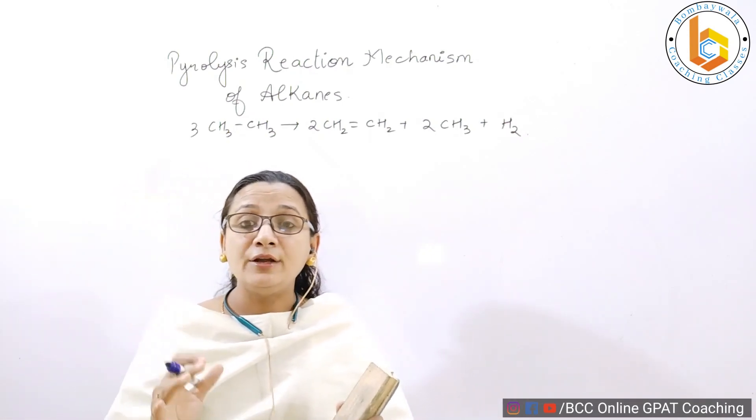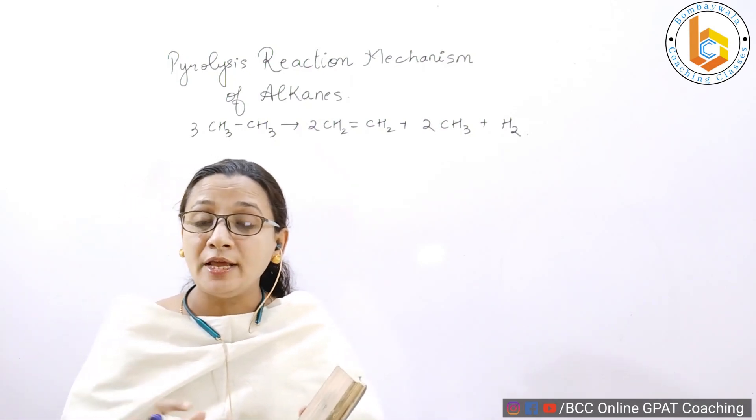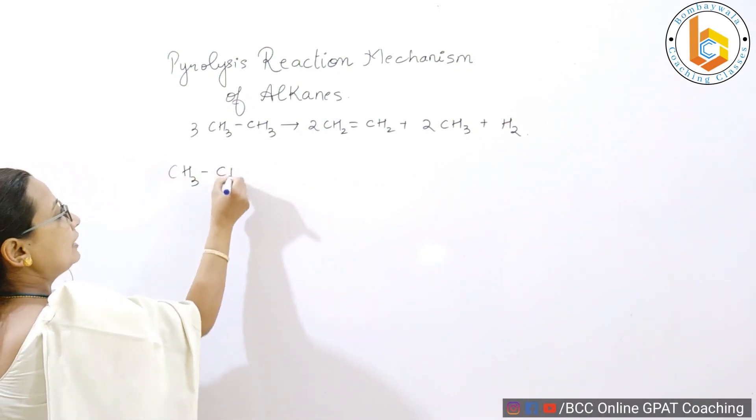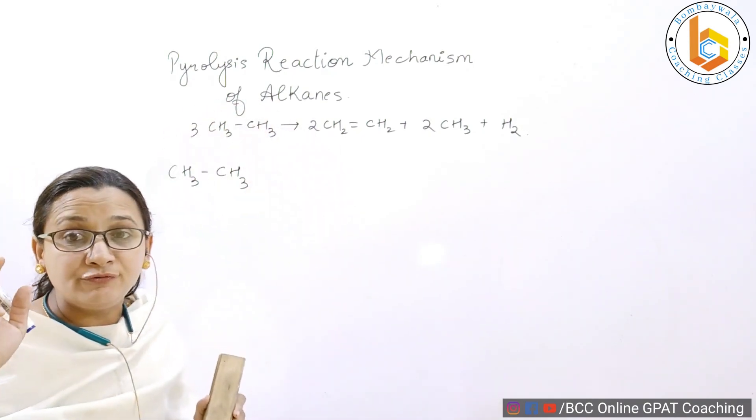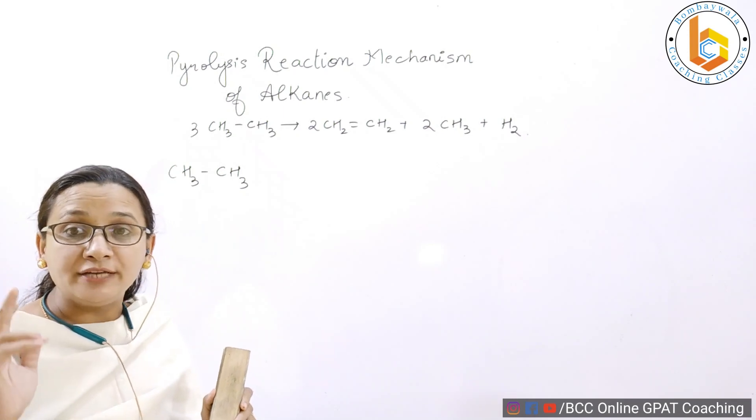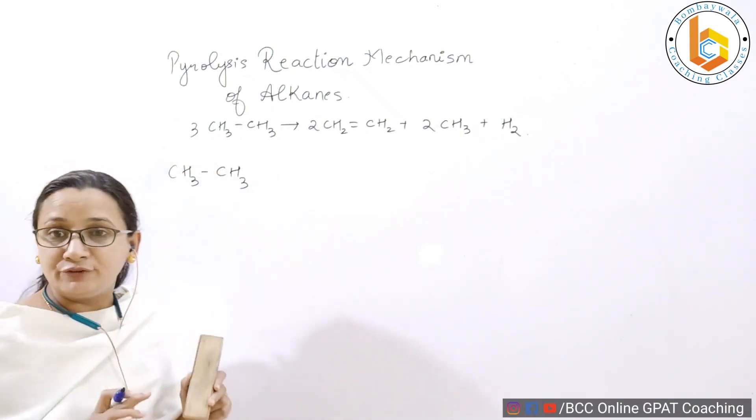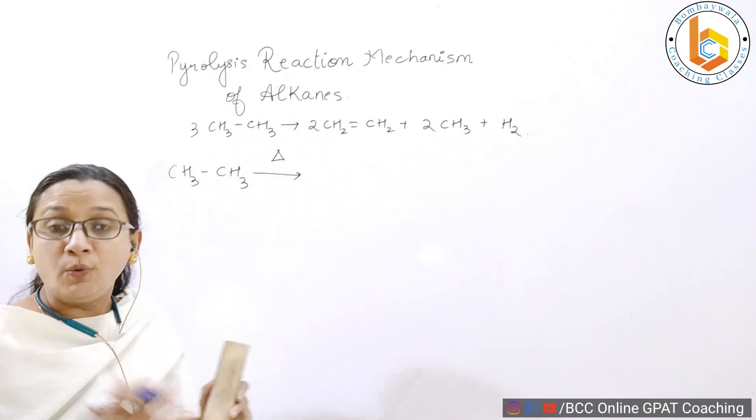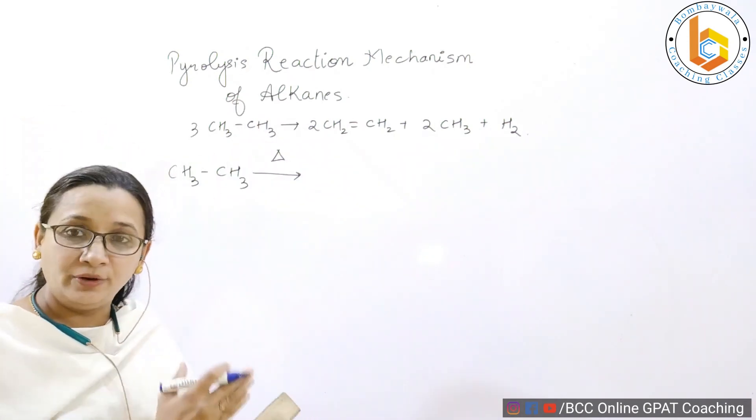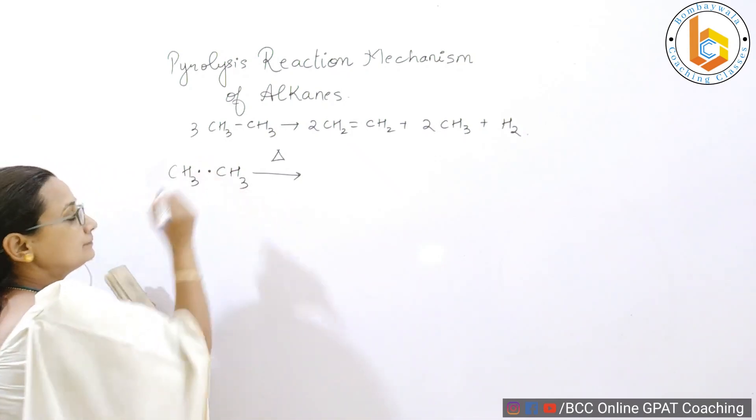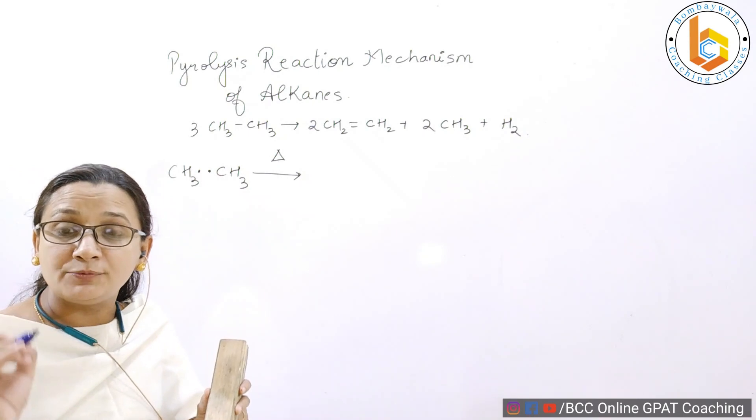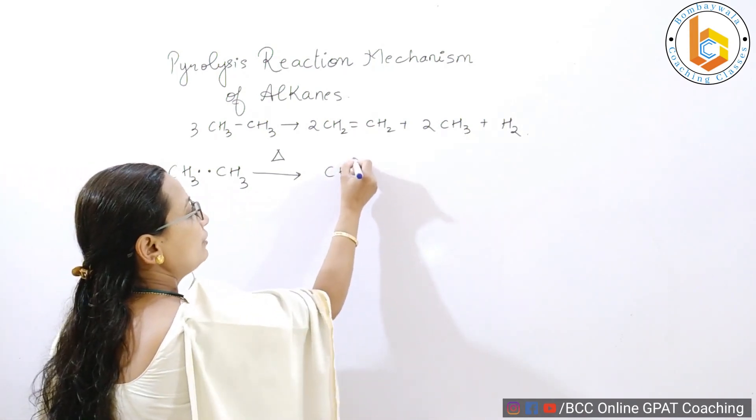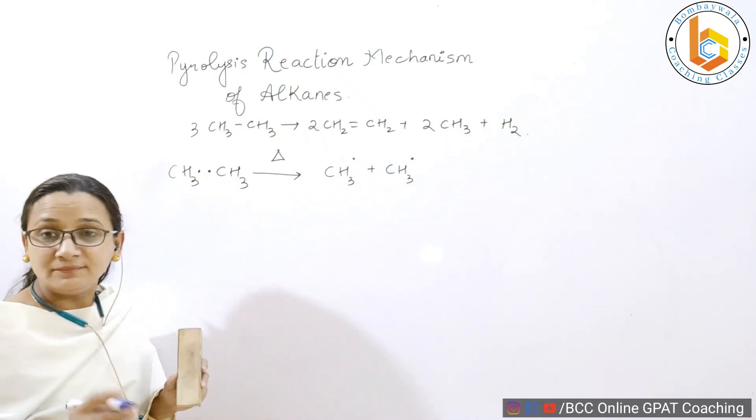Always remember that a free radical mechanism always starts with a step called initiation. So what is happening here? Have a look. We are taking for example a molecule of ethane, the first one out of the three and utilizing the first one. That is how you will remember how to write it also. We will apply heat, high temperature. We are going to do cracking, breaking down. And what happens here is homolysis. Please watch my video on the concept of homolysis. That means both the electrons are shared equally and there is formation of a free radical.